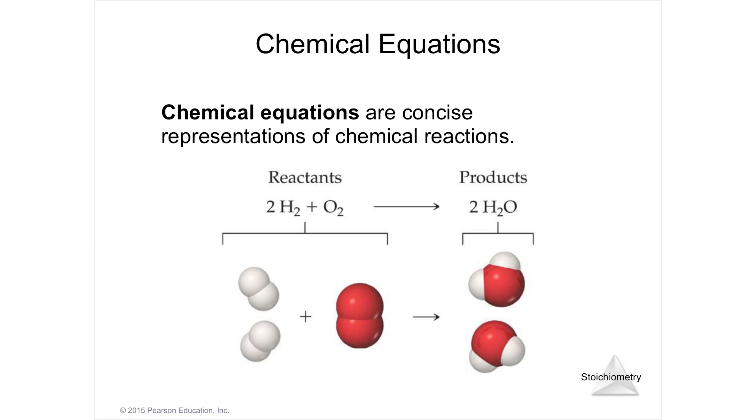So a chemical equation is simply, you see the word equation like a math equation, where you have an equal sign. You have reactants on the left and products on the right, and they are equal in matter.